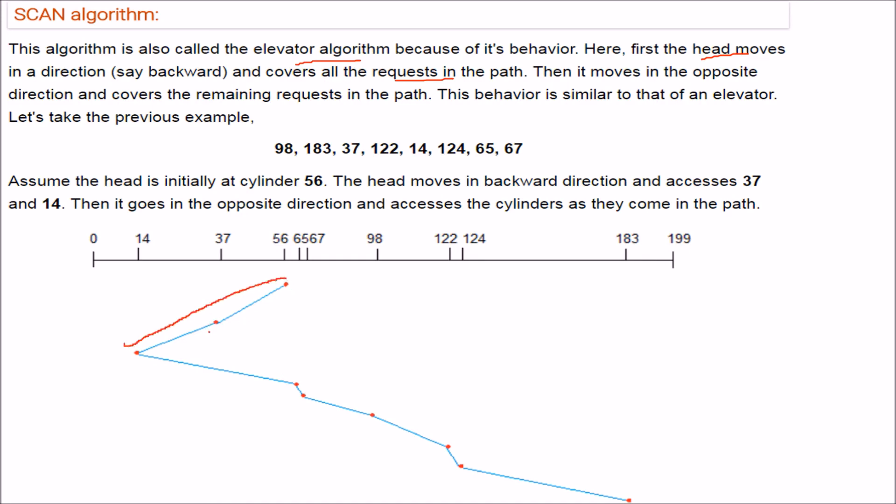Before it covers all the left one, then only it will go to the right one. Means it is moving backwards, so it will take off all the requests, it will go to all those sectors. Then it is going to change the direction. So then it moves to the opposite direction and then covers the remaining requests in the path. This behavior is quite similar to that of an elevator.